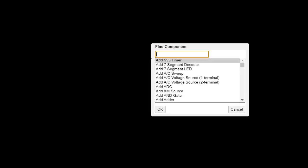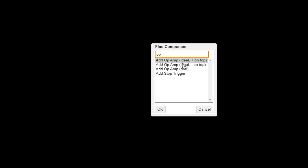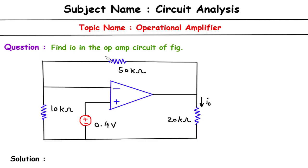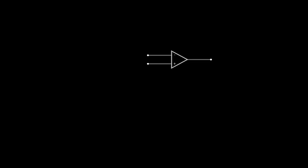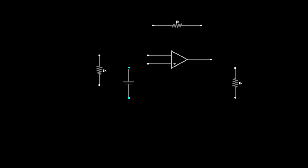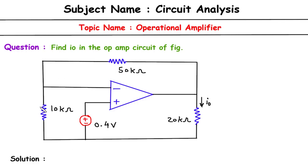This is our simulator. First of all, we have to draw the op-amp — specifically the ideal op-amp where the negative terminal is on top. So this is our ideal op-amp. Then after that, we need 3 resistors and 1 voltage source. So we will draw 3 resistors and 1 voltage source with 2 terminals where positive is on the upper side. Now we will connect them.